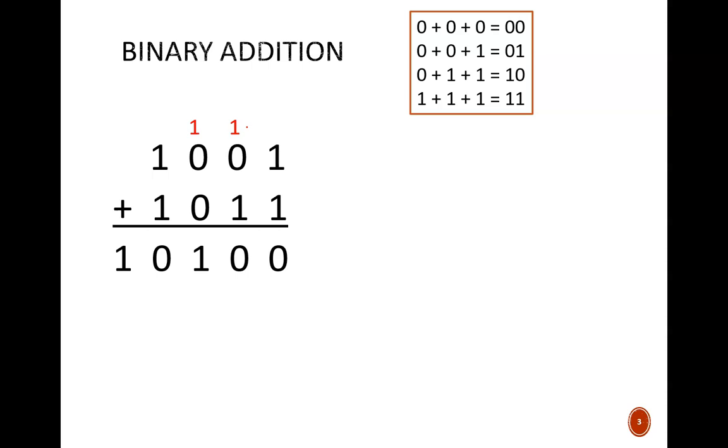For this example problem, we begin at the rightmost column and add 1 plus 1. This sums to 10. That's a two-bit result. The leading bit is called the carry bit, and the trailing bit is called the sum bit. So we write the carry above the next column, and the sum bit as part of the final solution.